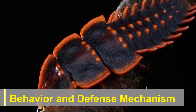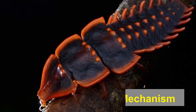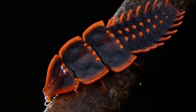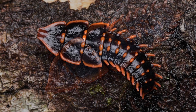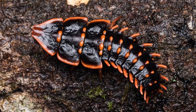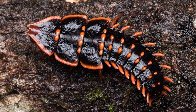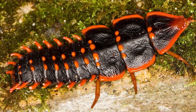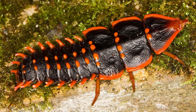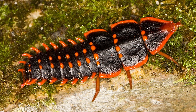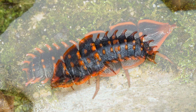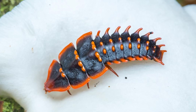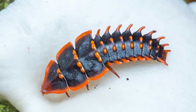Trilobite beetles are predominantly nocturnal creatures, being most active during the night. They are known for their secretive nature and are not commonly encountered by humans. When disturbed or threatened, trilobite beetles curl up into a ball, tucking their legs and antennae close to their body. This behavior, known as conglobation, allows them to protect their more vulnerable body parts and deter potential predators.